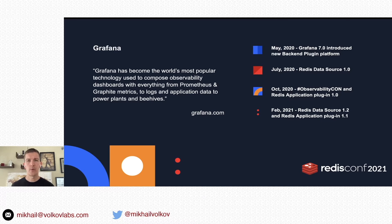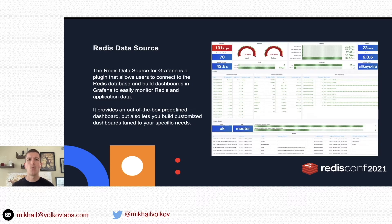In February 2021, we released the latest version of Redis data source and application plugin. The Redis data source for Grafana is a plugin that allows users to connect to a Redis database and build dashboards to monitor your Redis and application data.